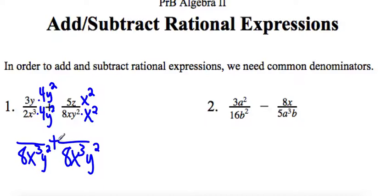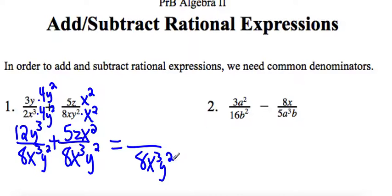Now my first fraction, the numerator, if I multiply, I get 12y cubed, and the second fraction is 5zx squared. Now I have a common denominator, so I can just leave that, 8x cubed y squared. And in the numerator, those are not like terms, so I can't combine them. I'll just write them exactly how they are: 12y cubed plus 5zx squared. And that's it. There's nothing to reduce because those weren't like terms, so we're done with that one.